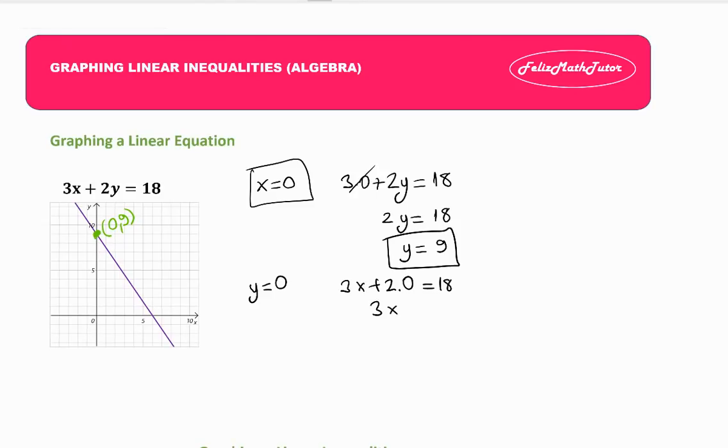I will have 3x equals 18, which is x equals 6. So I find my x-intercept.